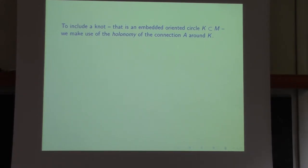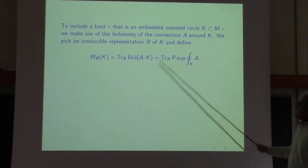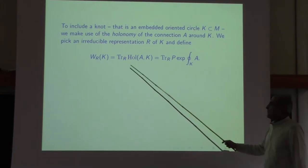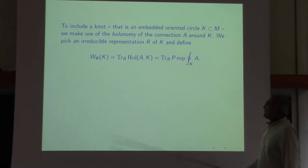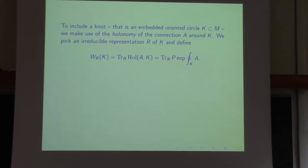A knot is an embedded oriented circle K in M, and we want to include a knot invariant using no information except M as a smooth oriented manifold. If we pick an irreducible representation R of the group G, a gauge field or connection restricted to a circle has a holonomy around the circle — which was also important in the lectures on flat connections. We can take the trace of the holonomy in our favorite representation. The trace of the holonomy gives an invariant of a gauge field restricted to a knot.